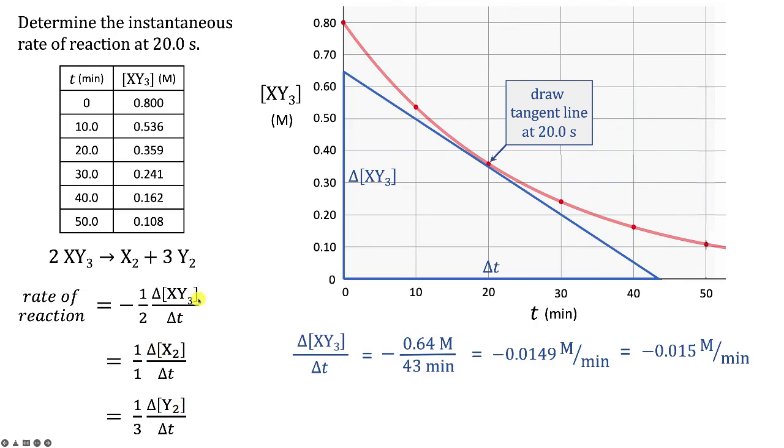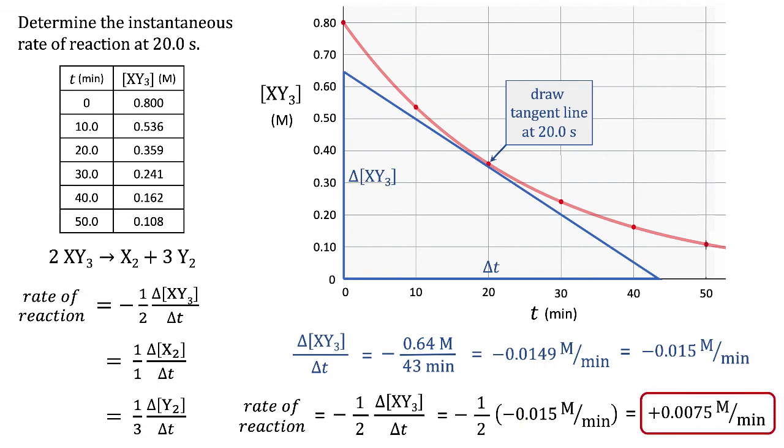We have XY₃ data, so our rate of reaction equals negative one half of change of XY₃ concentration with respect to time. That's negative one half times negative 0.015 molar per minute. The negative times negative makes it positive, giving us 0.0075 molar per minute as our estimated rate of reaction.